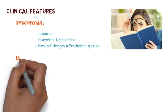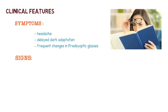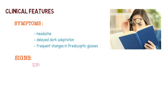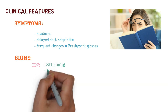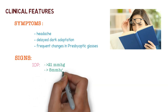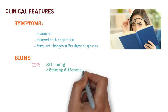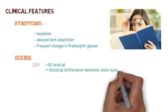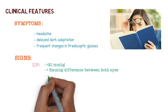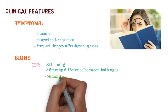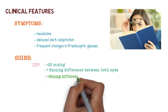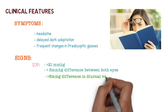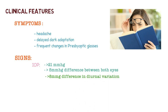Signs: intraocular pressure is raised, more than 21 mmHg. There may be asymmetry between both eyes of more than 5 mmHg, and there can be diurnal variation of more than 8 mmHg difference.